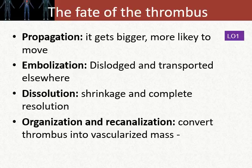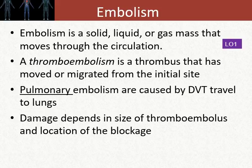Sometimes these clots can propagate and get bigger, sometimes they can move, and sometimes they can shrink or resolve by themselves. In some cases, they can actually become vascularized, due to inflammatory cells that infiltrate these clots and lay down a vascular network — the process of angiogenesis. Likewise, as these clots move, they become embolic. An embolism is a solid, liquid, or gas mass that moves through the circulation. Thromboembolism is a clot that has migrated out of the initial site and moved somewhere else. Atrial fibrillation can produce thromboemboli that move throughout the systemic vascular network. Pulmonary embolisms are typically caused by deep vein thromboses, occurring in the lower leg extremities and migrating into the lung compartment.